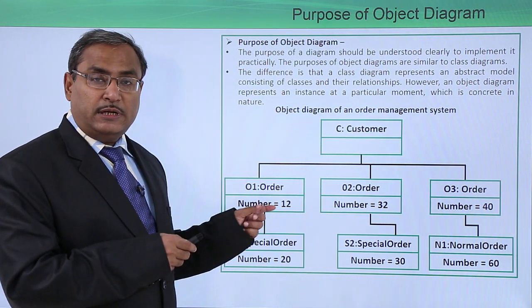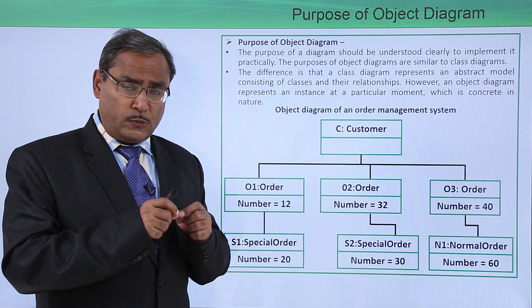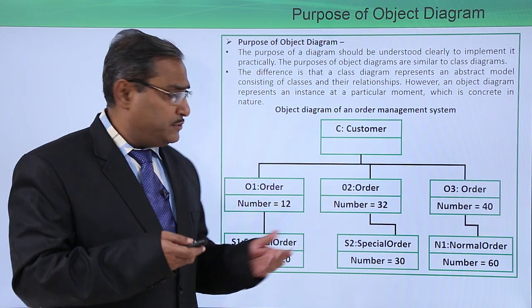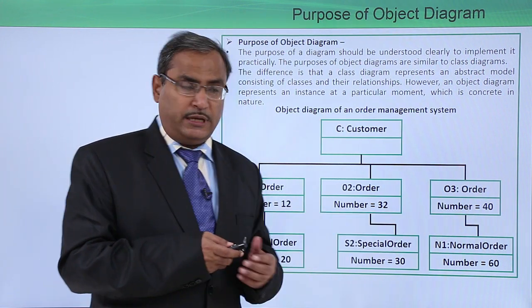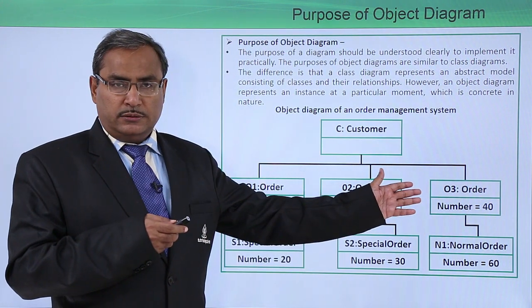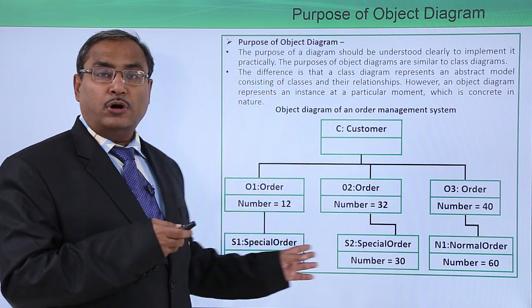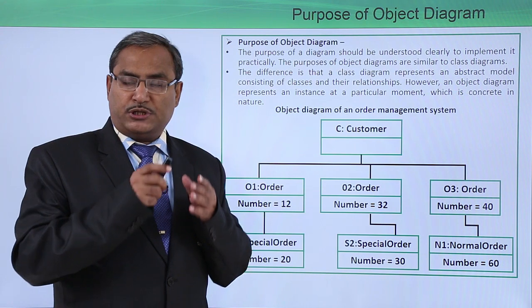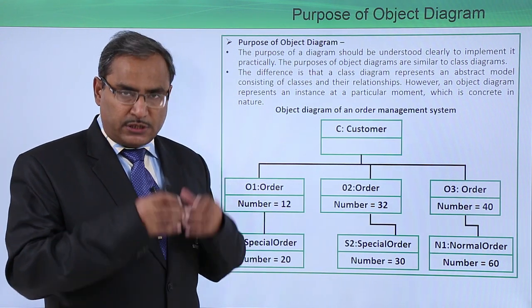Here we are having this respective property - the property is number which might be of integer type. That's why I have put 12, 32, and 40. From this Order we have inherited NormalOrder and SpecialOrder. They are nothing but the derived classes from this Order class.